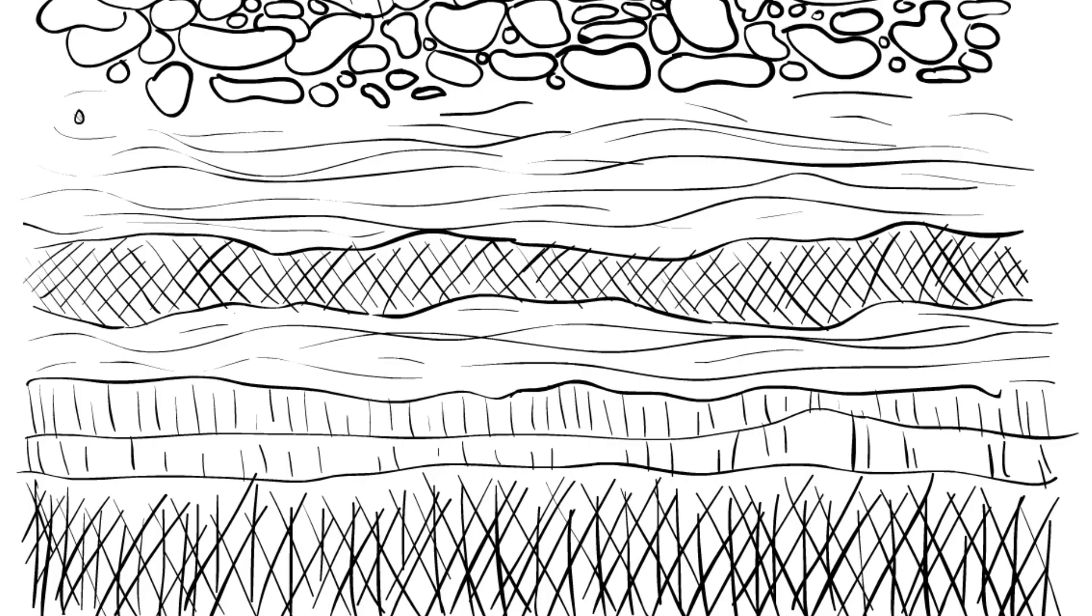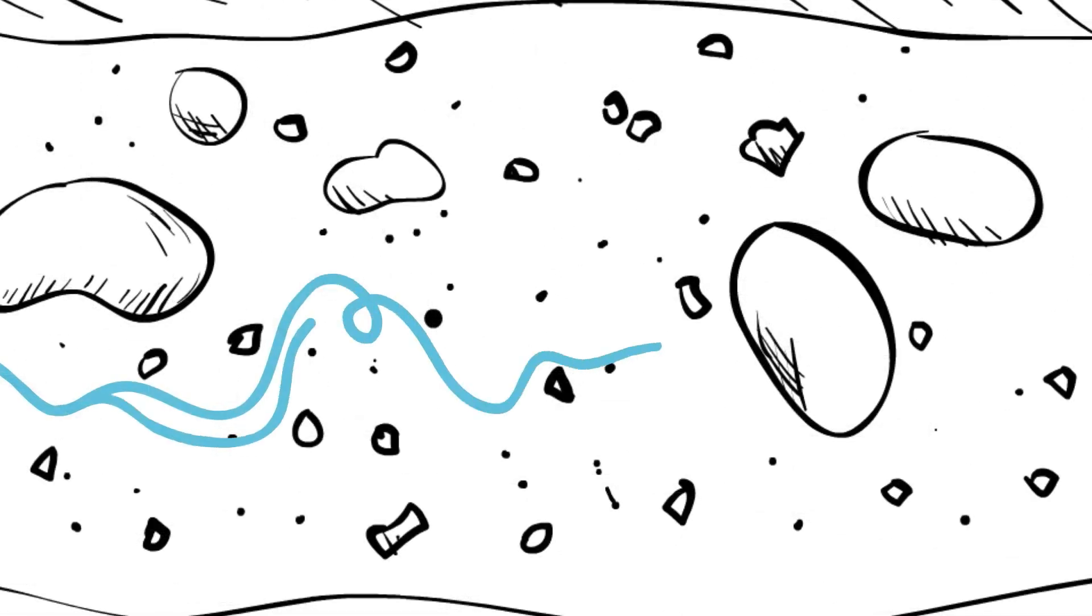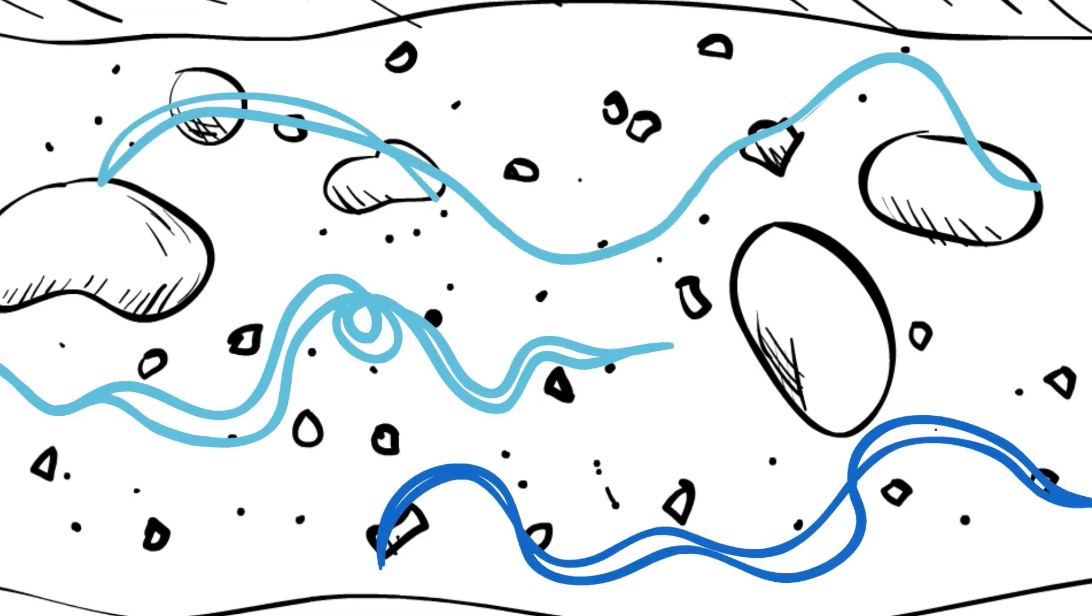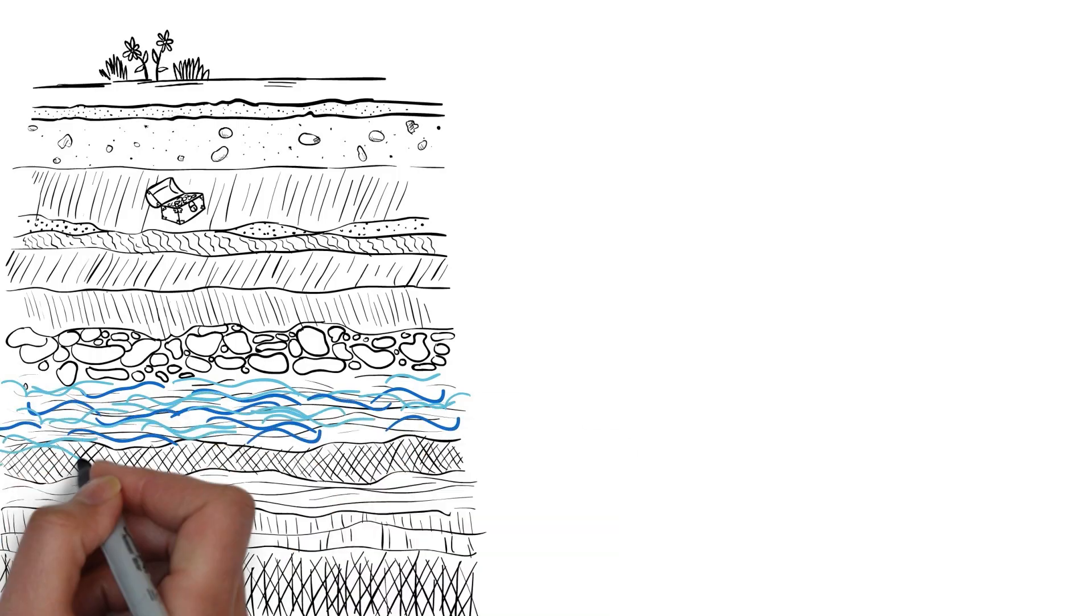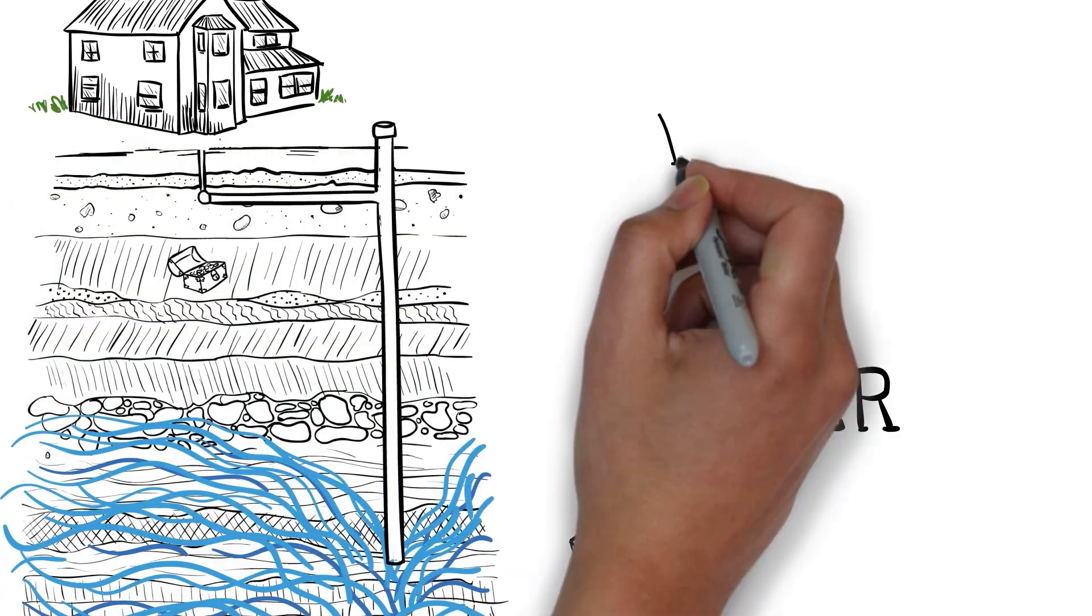25% of global fresh water is estimated to be stored as groundwater. Groundwater is found in crevices and cracks, and in the spaces between tiny particles of rock and soil. Aquifers are underground collections of water that produce useful quantities when tapped by a well.